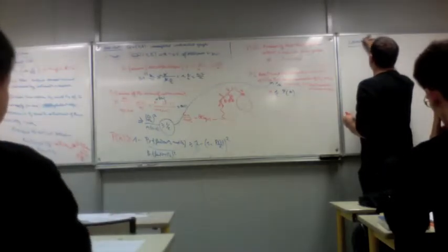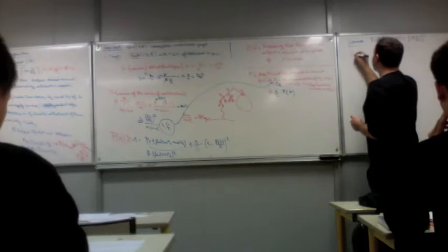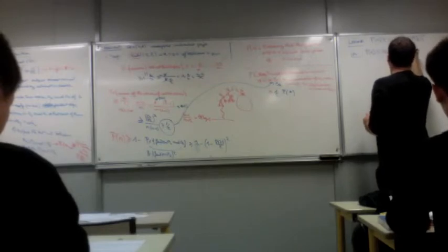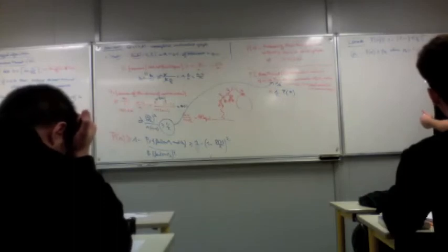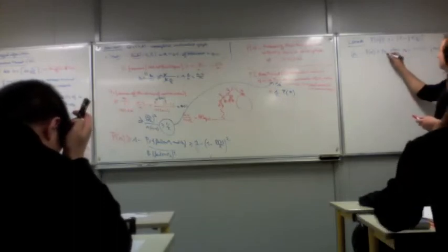Now what can I say? I have the following recursive equation. What we proved is that P of n, the probability of success of the algorithm, is at least one minus one minus one half P of n over square root of 2, squared.